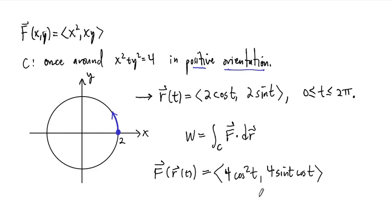And so what we need to do next is find dr. Well, dr is just the differential vector here. So the differentials of these, differential of cosine is negative 2 sine of t dt, and the differential of sine is 2 cosine t dt.